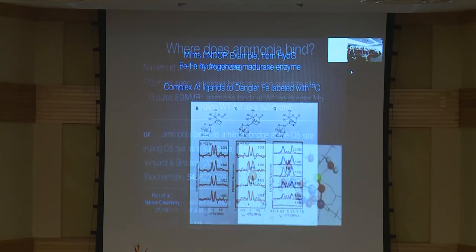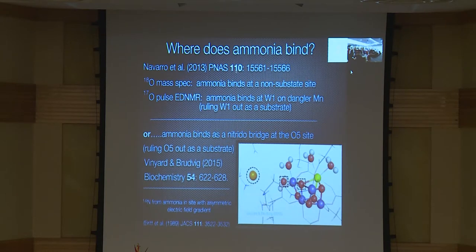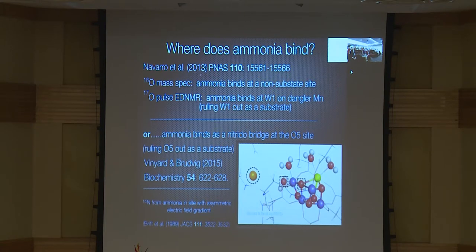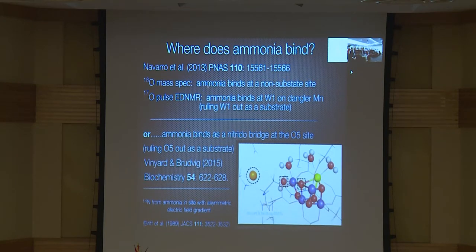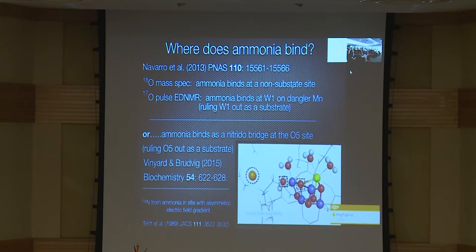Let's go back to PS2. I want to start with ammonia because it's been in a little bit of a renaissance lately, really starting with the paper from the Mülheim group — Navarro et al. — in PNAS several years ago. In addition to pulse EPR, they used electron ELDOR-detected NMR to look at O-17, which the Mülheim group has done quite effectively. Johannes worked with them on the mass spec. One thing that came out of this careful study is that ammonia appears to bind at a non-substrate site — so showing where ammonia binds can rule out one mechanism.